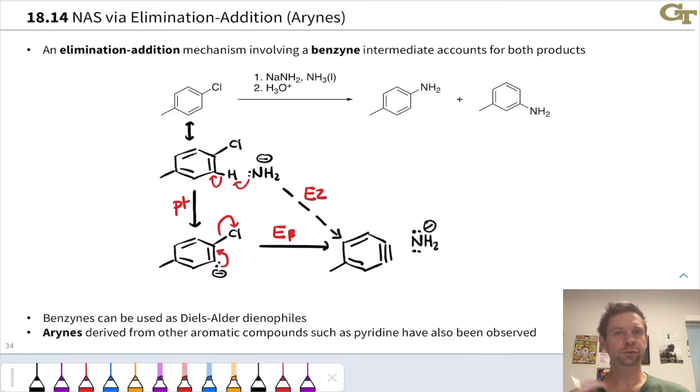By the way, here I'm showing a two-step mechanism with proton transfer followed by beta elimination. This reactive intermediate could also be generated through a one-step E2 type elimination, and really either mechanism is fine for our purposes.